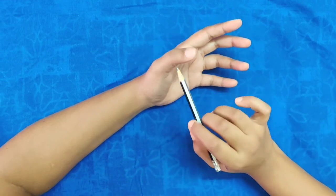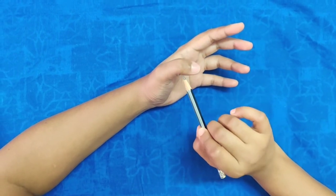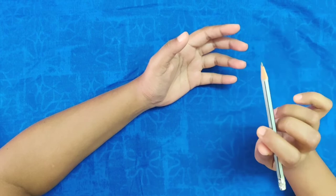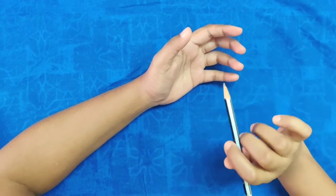The flexor pollicis longus flexes the interphalangeal joint of the thumb, and the FDP flexes the distal interphalangeal joints of the fingers.